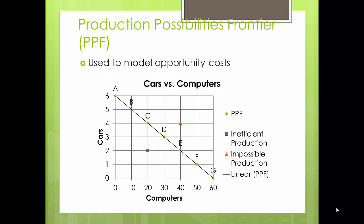A production possibilities frontier can also be used to model opportunity costs. In this graph, the line represents all the data we had in the previous chart, with various points marking the possible production points we can have. Note that there are two additional points on this graph not included in the chart. The gray point is below the line — this represents inefficient production, currently at two cars and 20 computers. We could easily produce 20 additional computers or two additional cars without sacrificing anything. This inefficient production is usually the result of unemployment, under-allocated resources, or inefficient production methods. The orange point above the line represents impossible production — it's impossible to produce 40 computers and 40 cars. This point represents future production; if technology or productivity improves, the whole production possibilities frontier will shift.